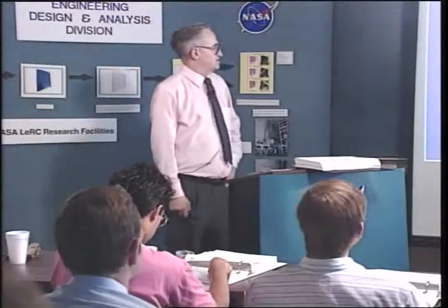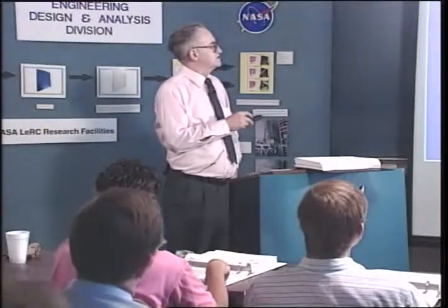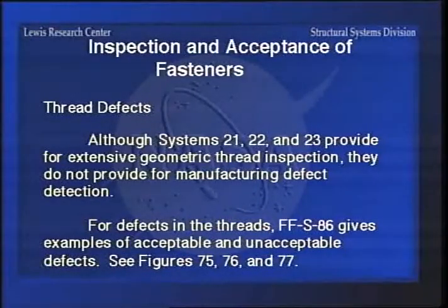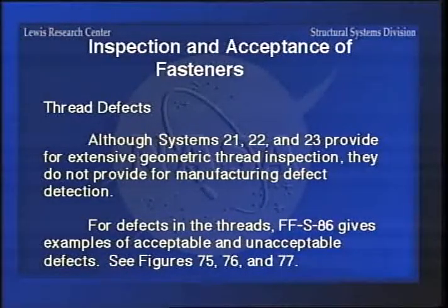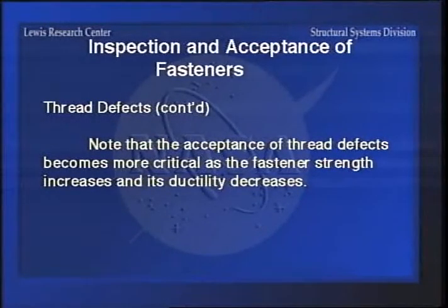Now we move on to the cold hard facts of life - even though you've inspected the heck out of threads with these three systems, if you run it through all of them you still haven't looked for manufacturing defects. For defects in the threads, FFS 86 federal spec gives examples of acceptable and unacceptable defects. The acceptance of thread defects becomes more critical as the fastener strength increases and the ductility decreases, so there has to be some engineering judgment exercised.